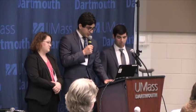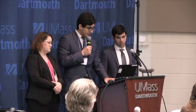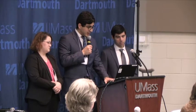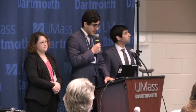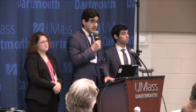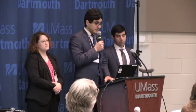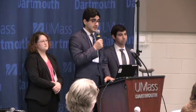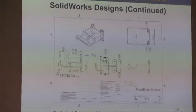For the mechanical design — here is a pump, which mimics the cardiac function. It beats intermittently to simulate heart rate. These six sections are the solenoids. There are two per artery: one to prevent backflow and one to act as the arterial valve. And here are the three types of arteries: elastic, hyper-elastic, and stenotic.